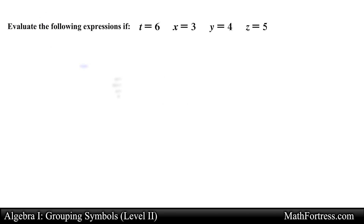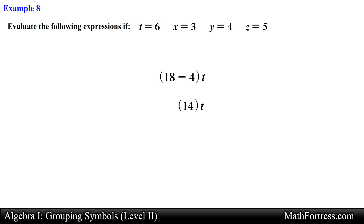Alright, let's try the next one: the quantity (18 minus 4) times t. We first simplify the expression within the parentheses, which reduces to 14. Now we have 14 times t. Since t equals 6, we substitute t with 6 using parentheses, giving us 6 times 14 which simplifies to 84.